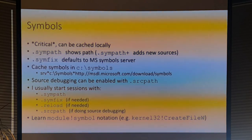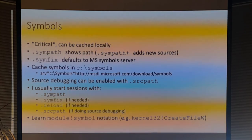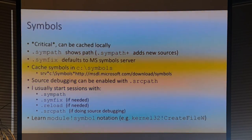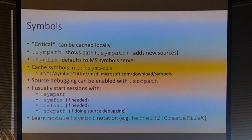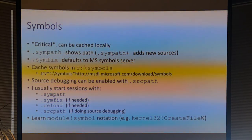Symbols are big and take a lot of time to download, so you can do local caches. The SRV syntax has a local path for caching and an upstream remote store. That line basically reads: get symbols from msdl.microsoft.com and cache them in a local symbols folder. If you're doing this on your dev machine, you definitely want to cache symbols — it takes forever to download them. If it's a production machine you hardly ever get on, it may not be worth it.